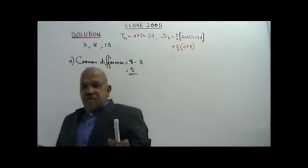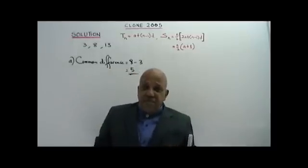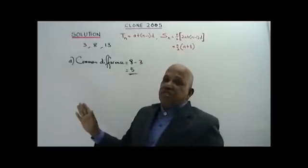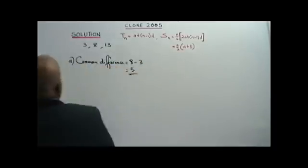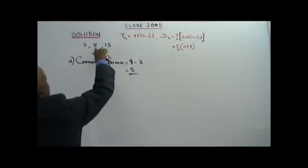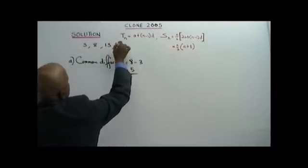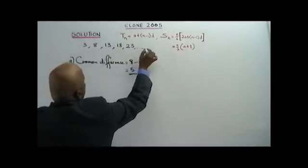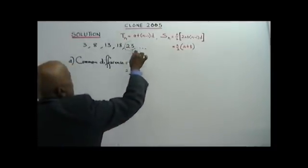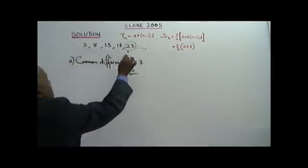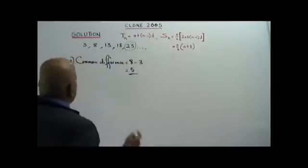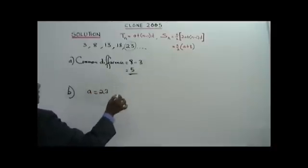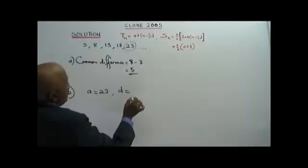Part B: you are asked to find the sum of the first 16 terms after the fourth term. So: 3 plus 5 is 8, 8 plus 5 is 13, 13 plus 5 is 18, 18 plus 5 is 23. This 23 is the first term after the first four terms. So let the first term A be 23, and the common difference D equals 5.